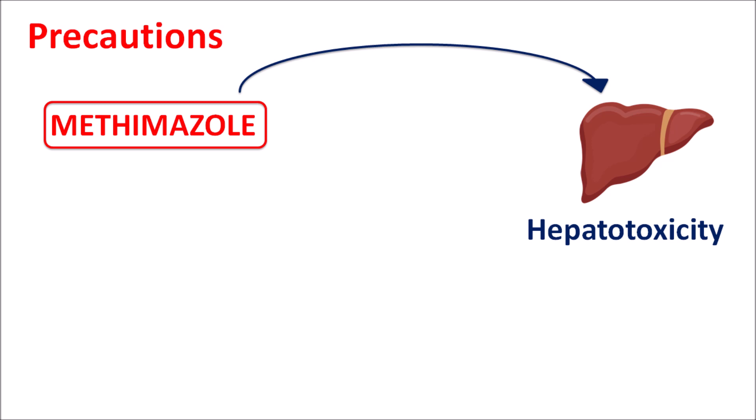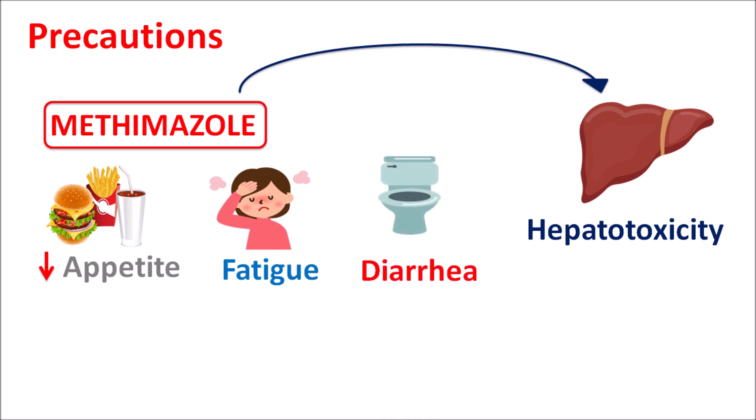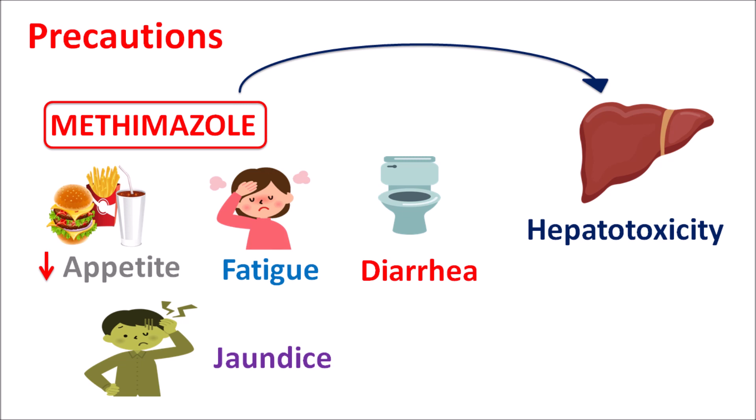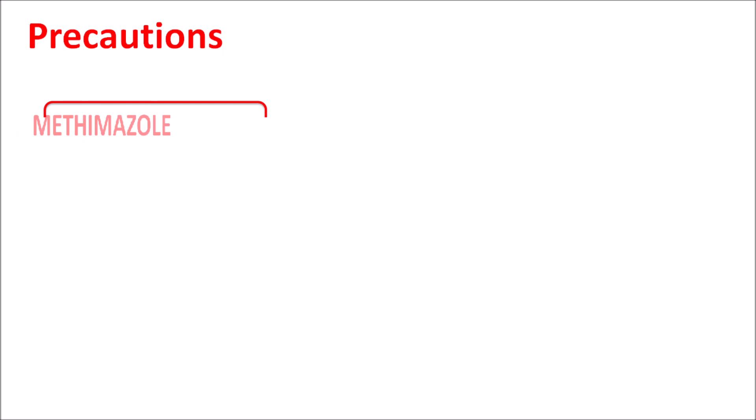The risk of hepatotoxicity is less pronounced with methimazole compared to other thioamides. Within the thioamides, propylthiouracil carries a greater risk for hepatotoxicity, whereas methimazole is less likely to produce it. Still, care should be taken to check for hepatotoxicity with long-term use. If symptoms such as loss of appetite, unexpected fatigue, diarrhea, or jaundice develop, liver function tests should be performed to check for hepatotoxicity.